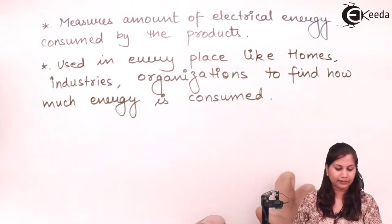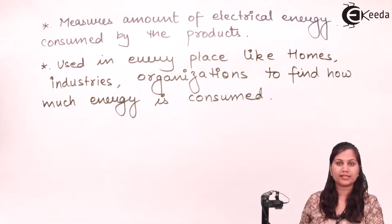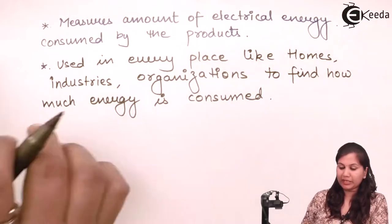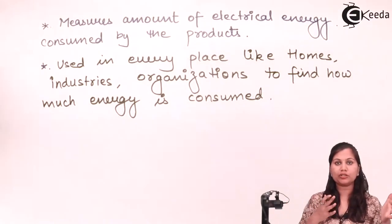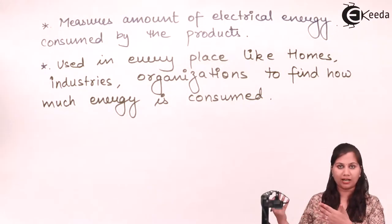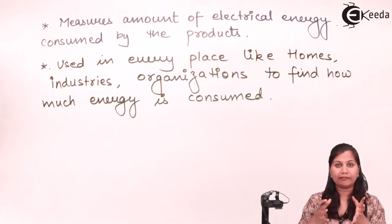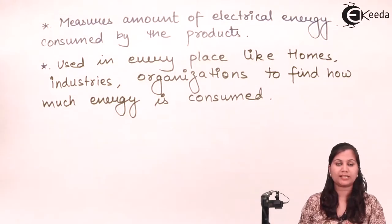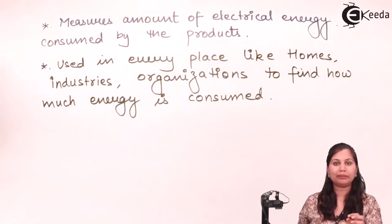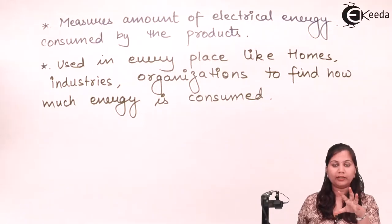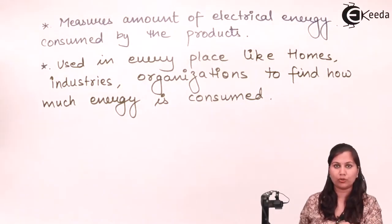Energy is the power consumed for a particular period of time. When we are measuring the power for heavy loads over a period of time, we take it in the form of hours. For heavy loads, when we are using these energy meters, we have to use some protection, because when heavy currents pass through the energy meters they can be damaged. Whereas for low currents, they can be directly connected with the appliance whose energy we want to measure.